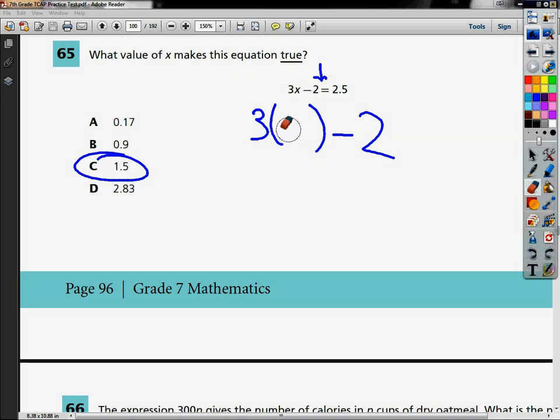Get rid of this. Same thing. 3, parenthesis, I try 0.9. So I type in 3, parenthesis, 0.9, close the parenthesis, minus 2, and it gives me 0.7. But in order for my statement to be true, it's supposed to equal 2.5. And 0.7 and 2.5 aren't the same thing. So that's out.